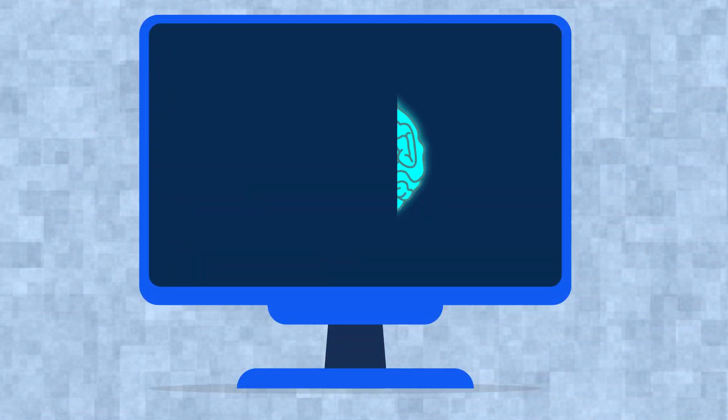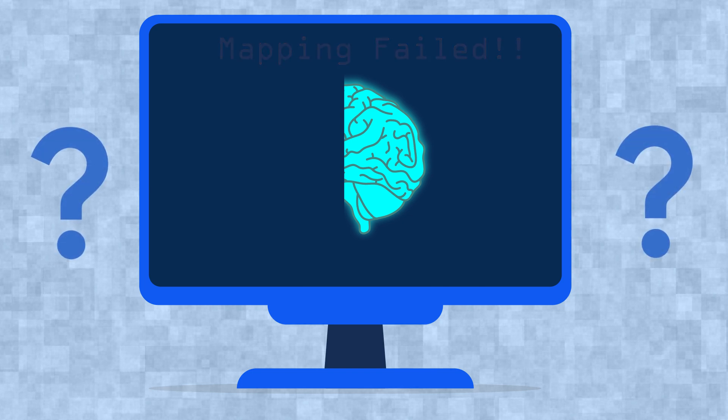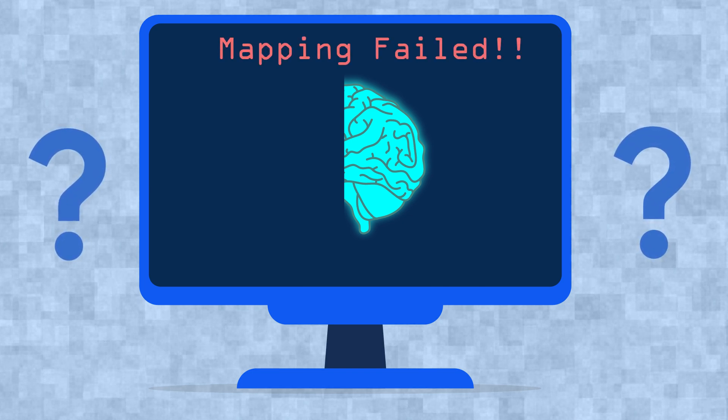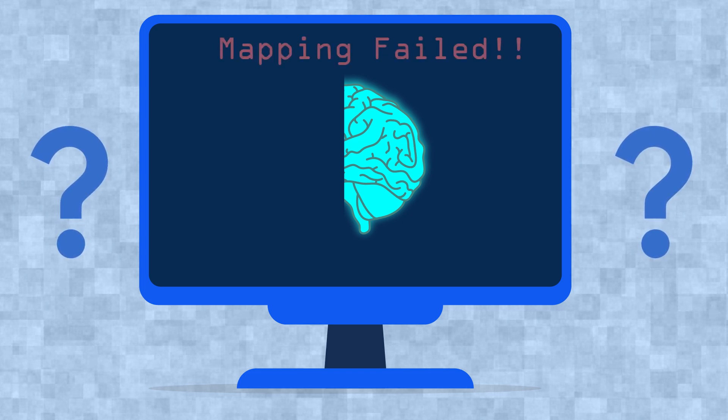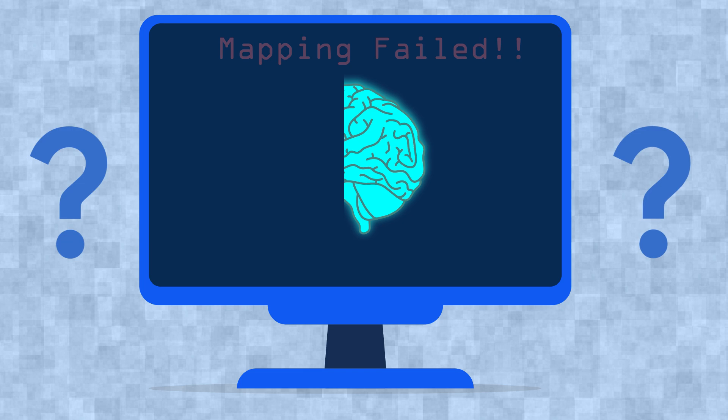If mapping a fraction of the brain requires this much computational power, what would it take to map an entire human mind? Would it be possible to recreate every neural connection, every synapse, and every firing pattern in a way that preserves identity?